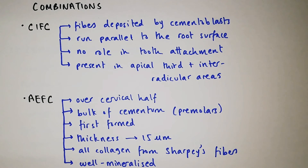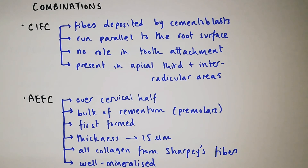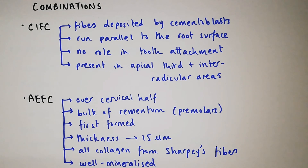Two types of combinations exist: cellular intrinsic fiber cementum and acellular extrinsic fiber cementum. In cellular intrinsic fiber cementum, the fibers are deposited by cementoblasts, run parallel to the root surface, play no role in tooth attachment, and are present in the apical third and interradicular areas. In acellular extrinsic fiber cementum, the fibers cover the cervical half and form the bulk of cementum in premolars. Being acellular, they are first formed, their thickness is approximately 15 micrometers, they are well mineralized, and all the collagen of the fibers comes from Sharpey's fibers.